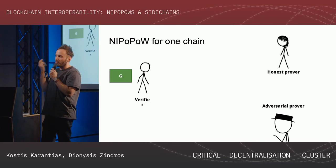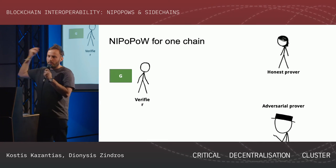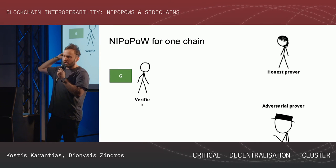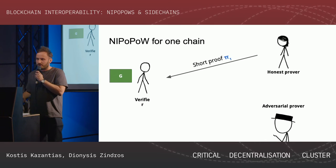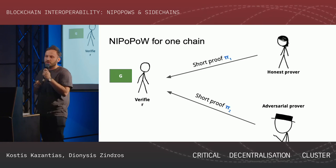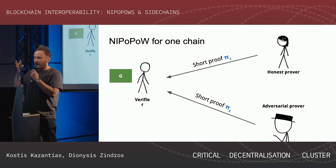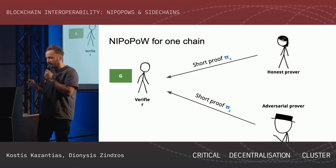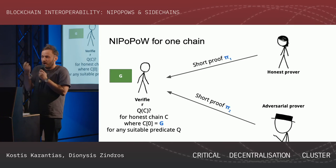Let's move on to NiPoPoWs. The question is: you have a verifier — in our case a smart contract — and several provers, some honest, some adversarial, all submitting information. We'd like them to submit not the full chain of headers but some compressed form that attests to the work that happened on that chain. The verifier needs to determine whether an event happened — a transaction, a payment, or a Solidity event — pertaining to the actual longest chain on the underlying protocol. The provers send short proofs Pi1 and Pi2 rather than the full chains, and the smart contract compares them.